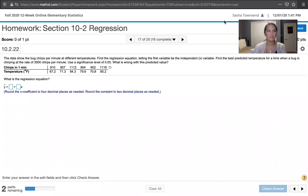In this video we solve problem 10.2.22 from Essentials of Statistics 6th edition by Mario Triola. The problem statement says the data show the bug chirps per minute at different temperatures. We're asked to find the regression equation, letting the first variable be the independent variable x, and find the best predicted temperature for a time when a bug is chirping at a rate of 3,000 chirps per minute. We're asked to use a significance level of alpha equals 0.05, and then we're asked what is wrong with this predicted value.